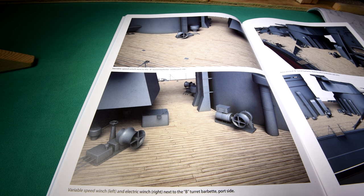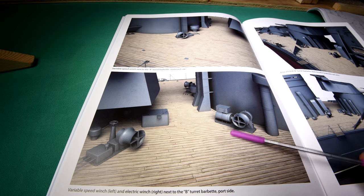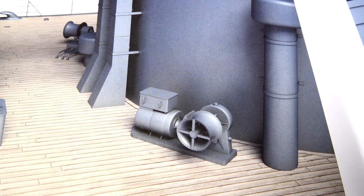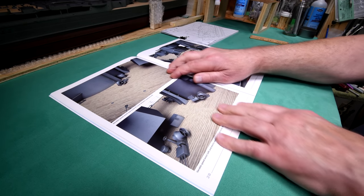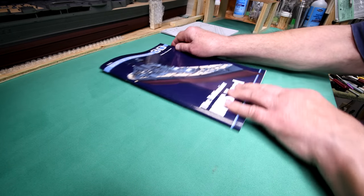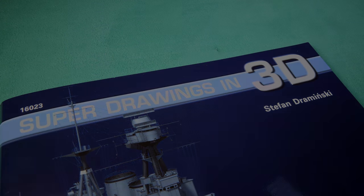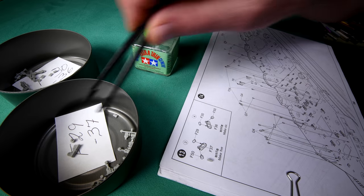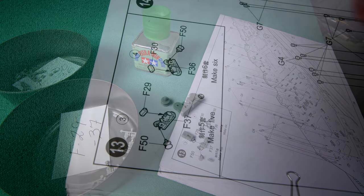Now you want to keep in mind, we are looking at drawings, not photographs. It says variable speed winch left, that'd be this one, and electric winch right, that'd be this one. And this is the one we're making. Yeah, it kind of looks like that. Now, just in case somebody is wondering where did I get these drawings? They are in this book right here.